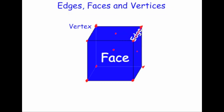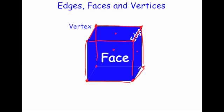Here would be an edge, this would be an edge, there'd be an edge here and an edge here — so four edges along the top. There'd be four vertical edges and there'd be four edges on the bottom. So a cube would have 12 edges, it would have six faces and it would have eight corners, eight vertices.